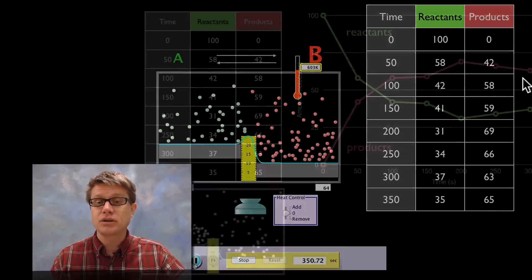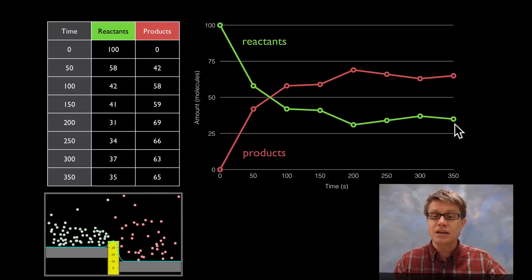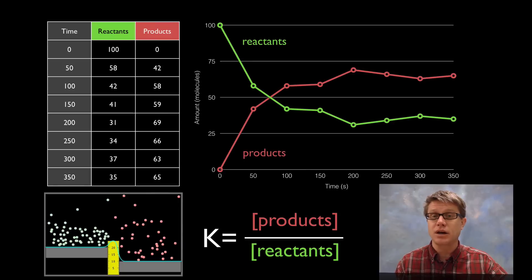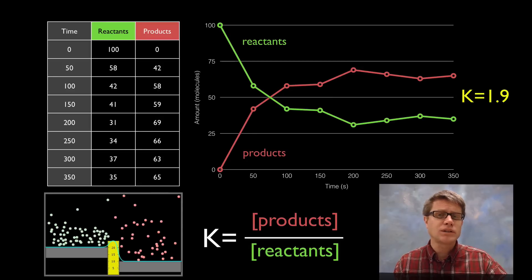Now I'm going to take this data and graph it. At the beginning we have all reactants and zero products, but you can see over time it's eventually reaching equilibrium. The equilibrium constant is simply the concentration of products divided by the concentration of reactants. If I calculate that: products is 65 and reactants is 35, so K is approximately 1.9. At the end when it reaches equilibrium, our K value is going to be 1.9.